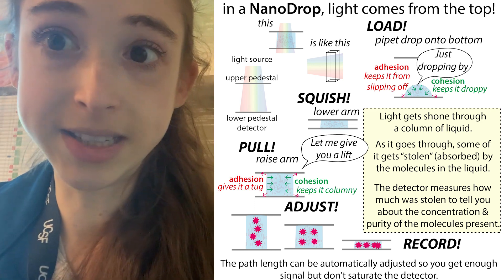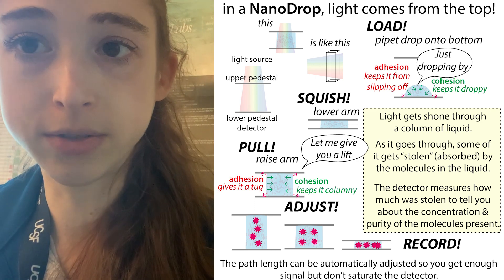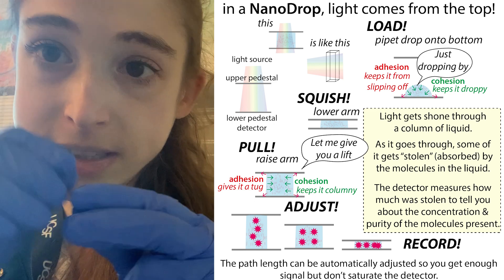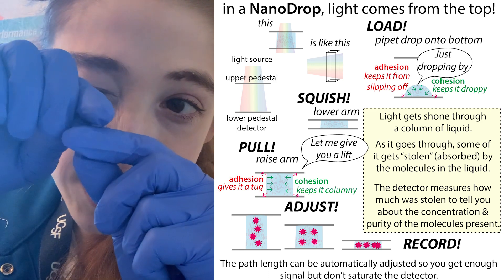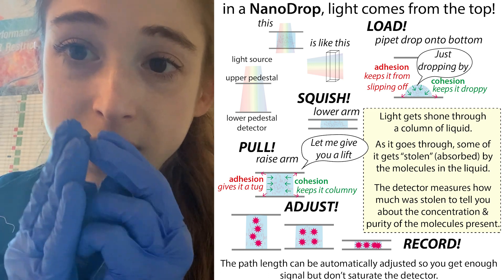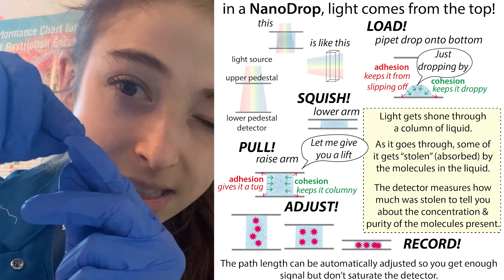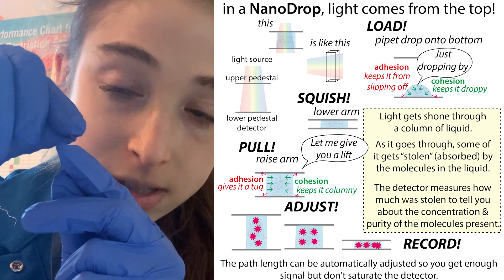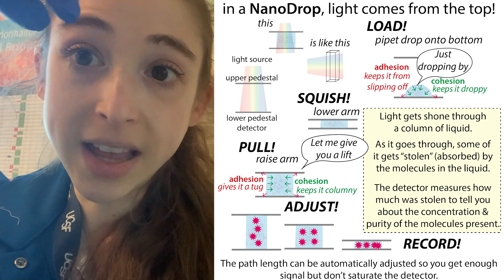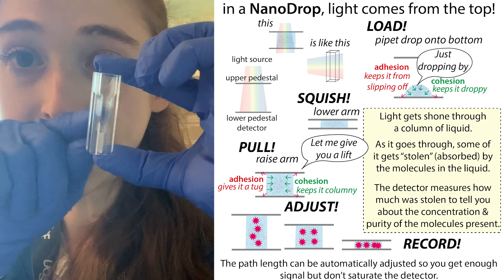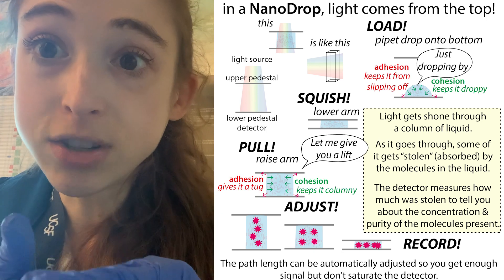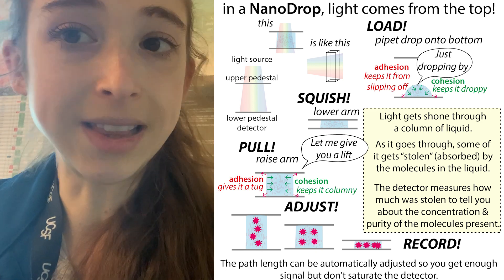The nanodrop is able to form that column because water is really sticky - both for itself and for surfaces. You get adhesion where it sticks to the metal parts on the top and the bottom, and cohesion where water molecules stick to other water molecules. When it's stuck to the bottom and the top and pulls up a little, you get this column. Then the light shines down through the top - unlike a cuvette where the light goes through the side - and a detector below measures how much of that light is absorbed.